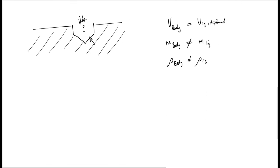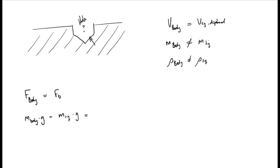Let's work out this force balance. The force of the body is equal to the buoyant force, which is the force of the water being displaced. This implies that the mass of the body multiplied by the gravitational constant must equal the mass of the liquid being displaced multiplied by the gravitational constant. The mass of the liquid being displaced equals the density of the liquid multiplied by the volume of the liquid displaced multiplied by the gravitational constant. From this, we see that the mass of the body equals the density of the liquid multiplied by the volume of liquid displaced.